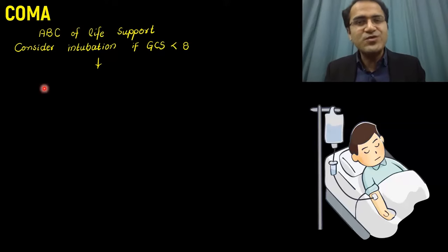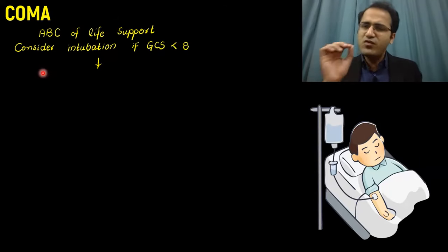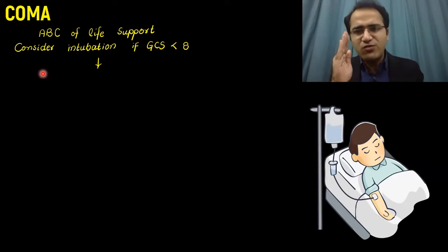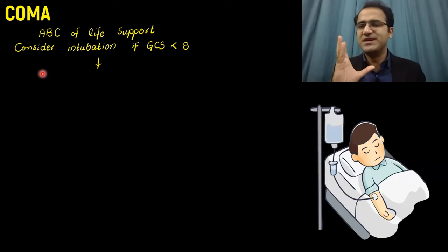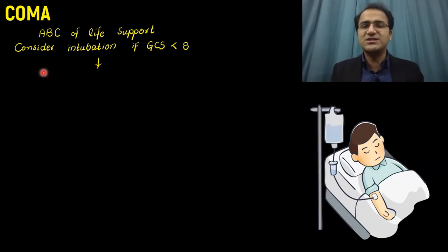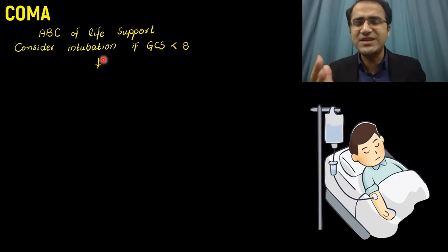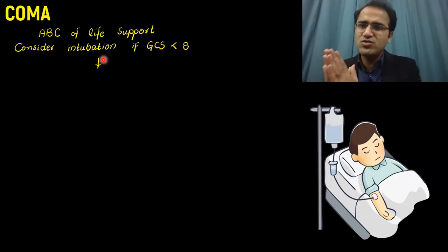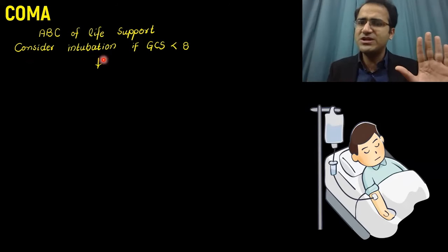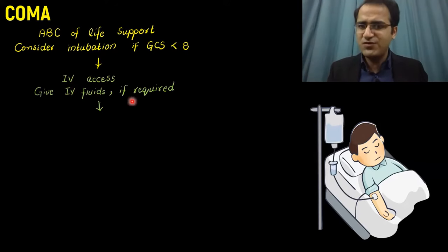If a patient presents to you in a deeply unconscious state, in coma, the first thing you need to do is approach the patient in an ABC manner. You protect the airway — airway is the top priority in this patient. Consider intubation if the Glasgow Coma Scale is less than 8; intubate the patient straight away. Then maintain IV access.